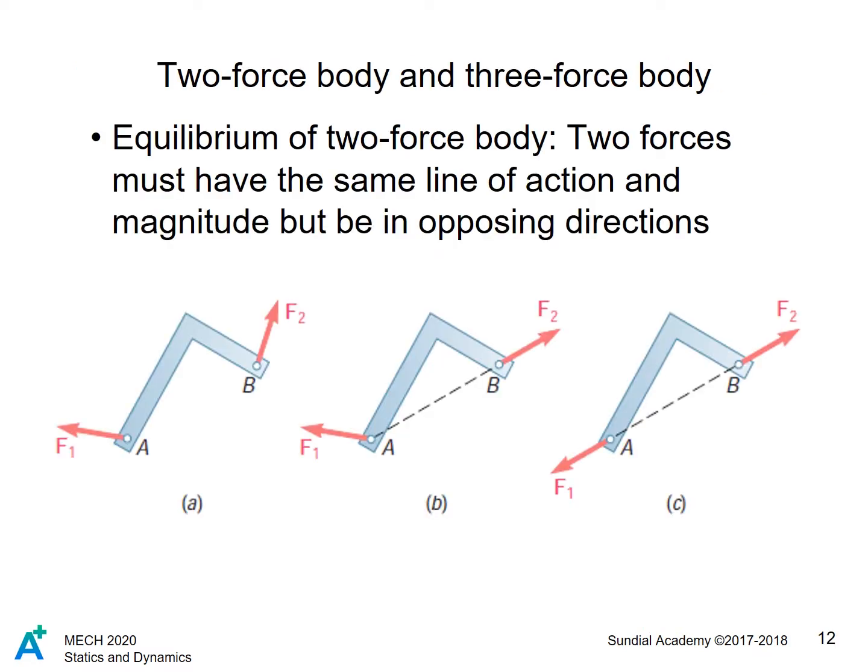So what are some common features of forces in rigid body equilibrium, say among a certain number of forces? As shown in the figure, the condition of equilibrium of the two-force body is that two forces must have the same line of action and magnitude, but act in opposite directions.